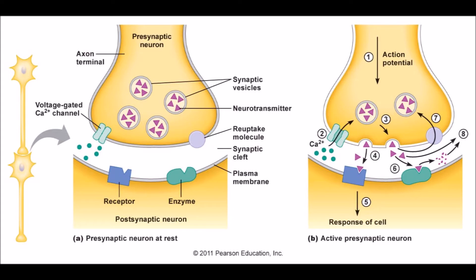The released neurotransmitter molecules bind with their autoreceptors and inhibit subsequent neurotransmitter release. Three outcomes can happen after these steps: reuptake, enzymatic degradation, and receptor binding.